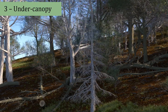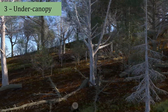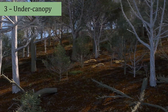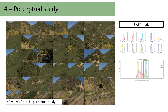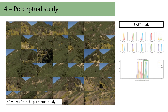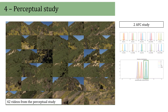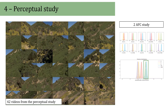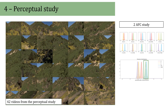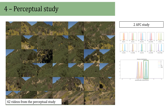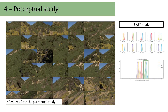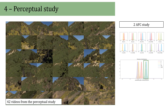Another under-canopy example of our deadwood simulation. We performed a study to determine the perceptual impact of tree variety from growth, death, decay, and disturbance. We used a two-alternative forced-choice study to compare side-by-side videos and obtain statistics with a Bayesian analysis. We observed that having dead trees and logs is more important for perceptual realism than a large variety of models.